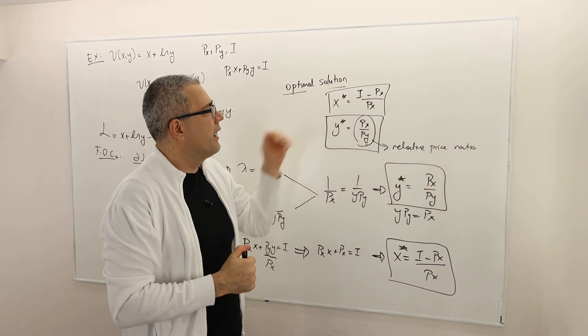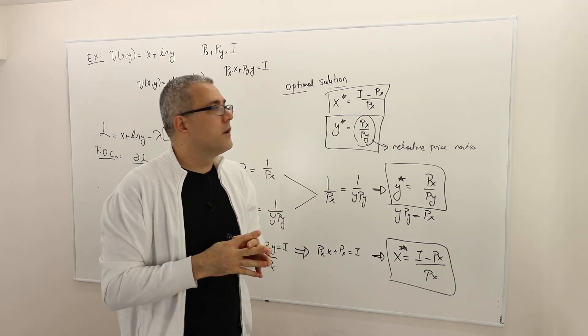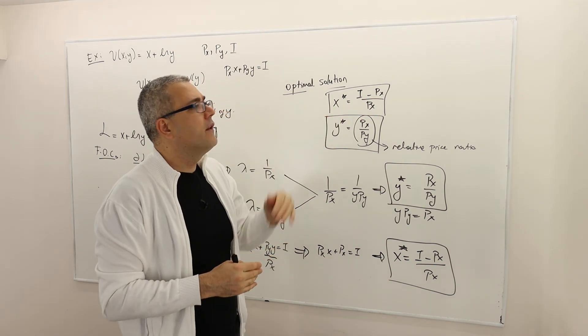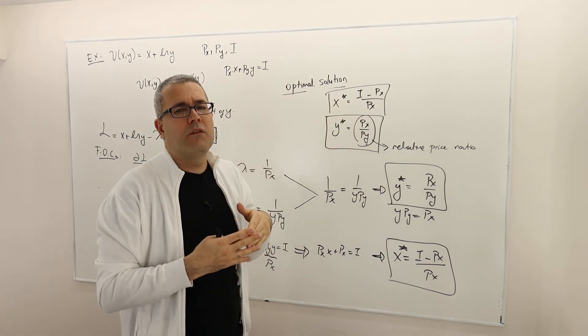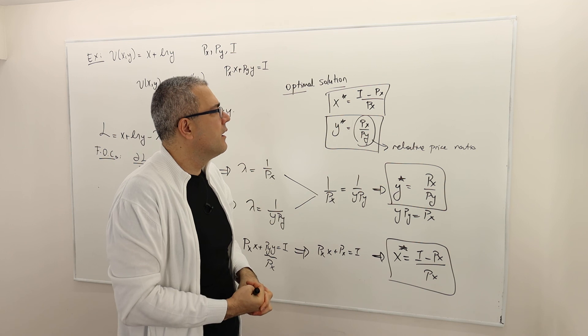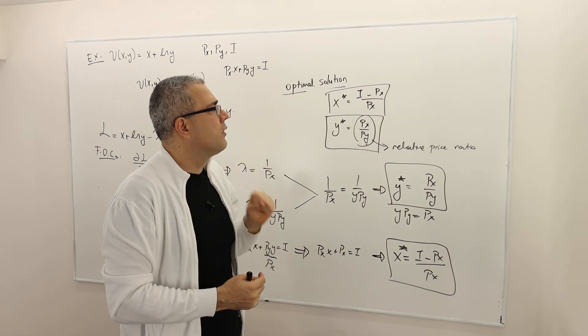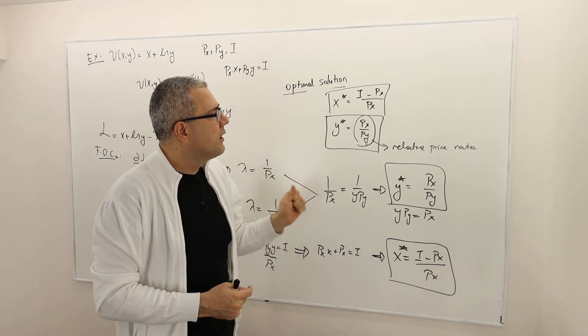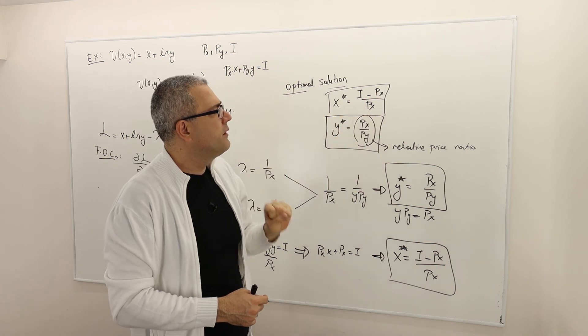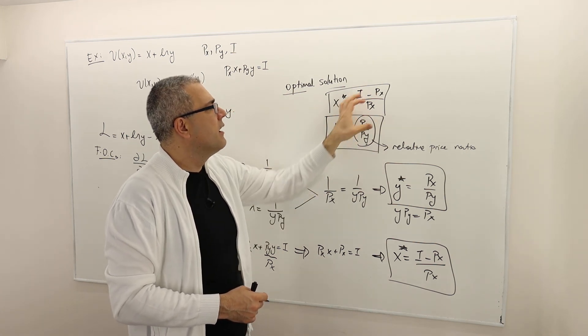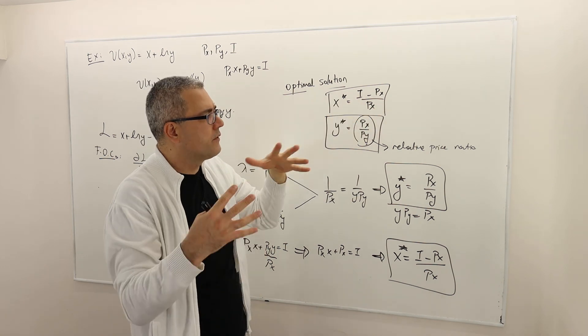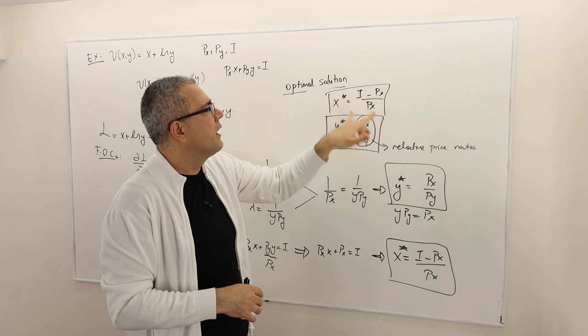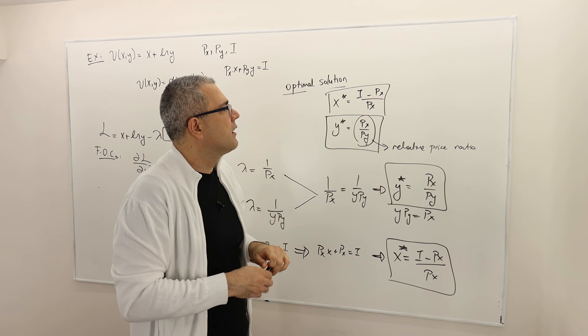However, x is, as normally the case, depends on the income. The more income you have, the higher level of consumption on x you should be picking. It basically says look, consume this much y, and then for the remaining of the money, buy this much x star.